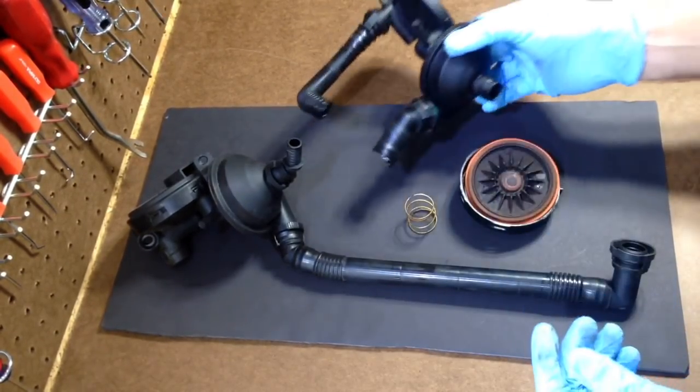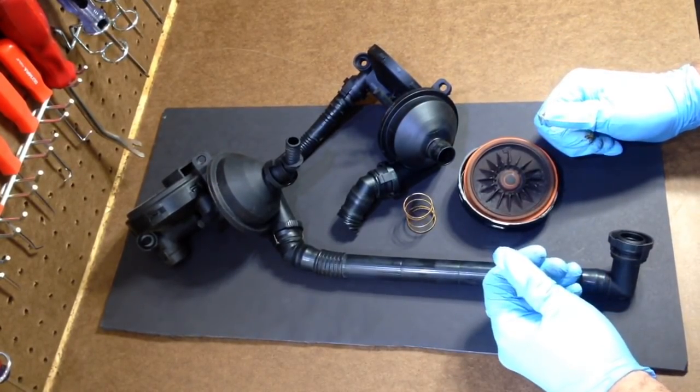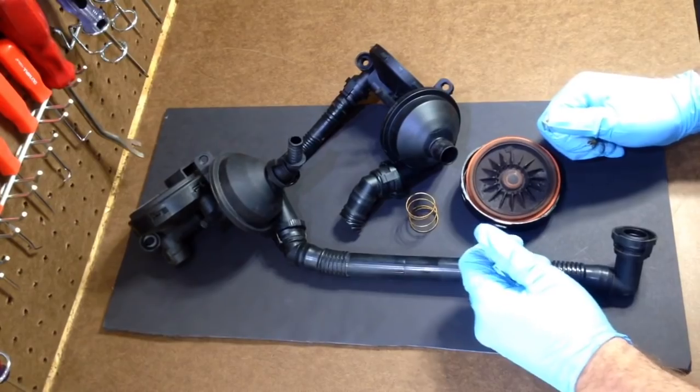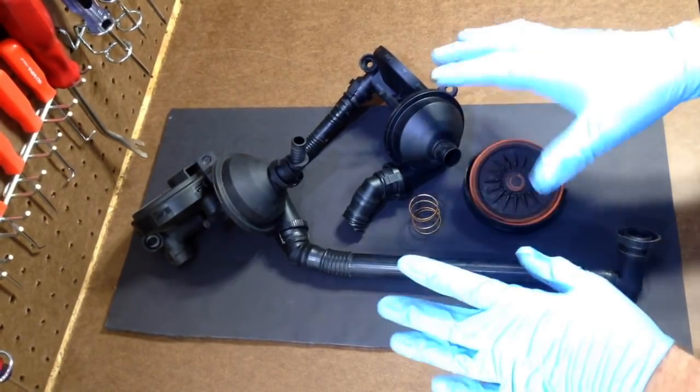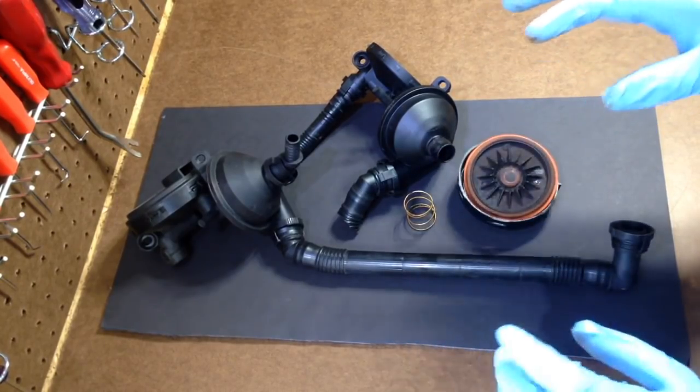Now, the number one scenario is basically a shop charges you $600 to replace this. You could buy these off eBay, they're about 40 bucks. And we do the catch cans. We don't put these on anymore because they're so unreliable. I just got sick of it.